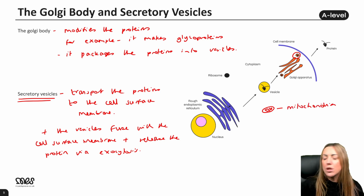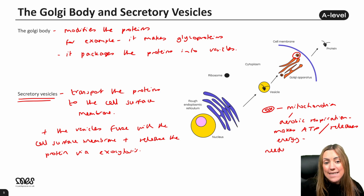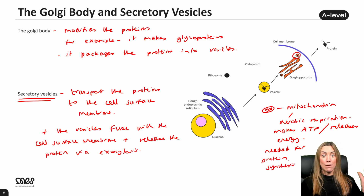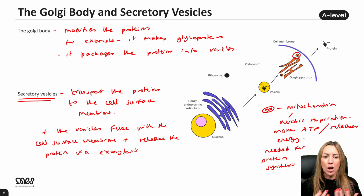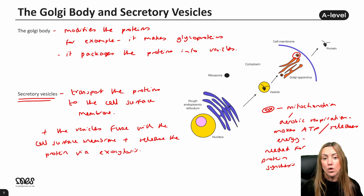We should also mention the mitochondria and their role in protein synthesis. The job of the mitochondria is aerobic respiration, which makes ATP and releases energy needed for protein synthesis. Protein synthesis involves joining amino acids in condensation reactions to make peptide bonds, which requires energy. Cells that make a lot of proteins will have not only a lot of ribosomes and rough ER, but also many mitochondria to produce more ATP for protein synthesis.